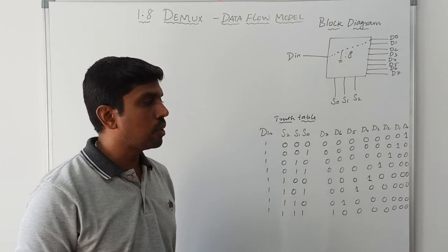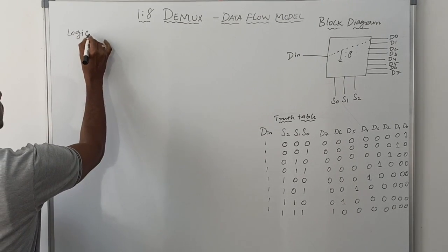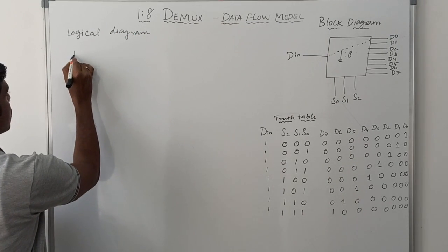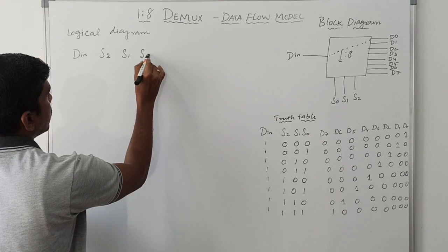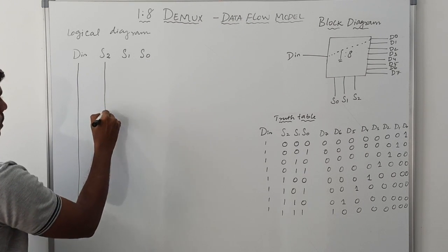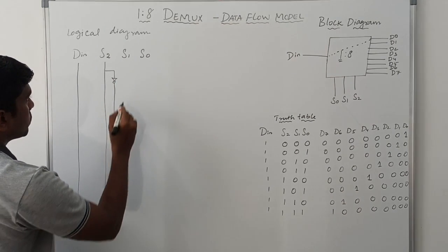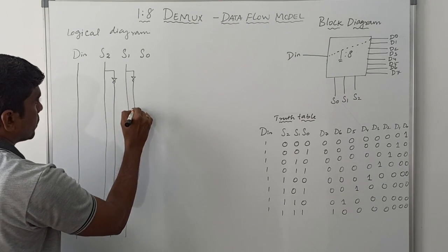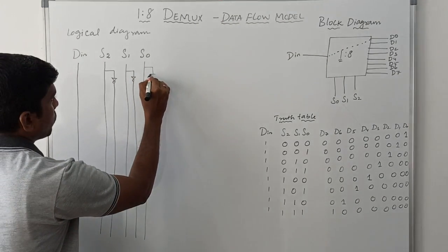Based on the truth table, we can draw the logical diagram. The logical diagram for DMUX has inputs DIN and selection lines S2, S1, and S0. We also show the inversions: not of S2, not of S1, and not of S0.